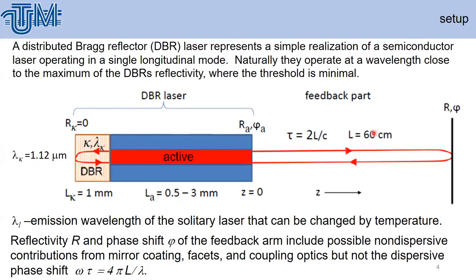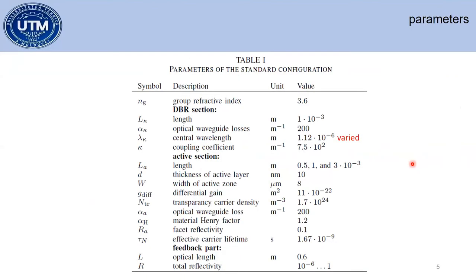L is around 60 centimeters from the front facet of the laser. Lambda L is the emission wavelength of the solitary laser, phi is the external phase, and R is the reflectivity of this mirror.